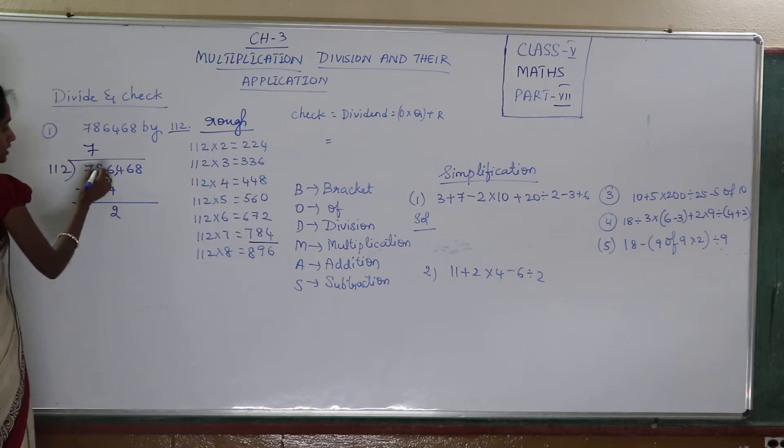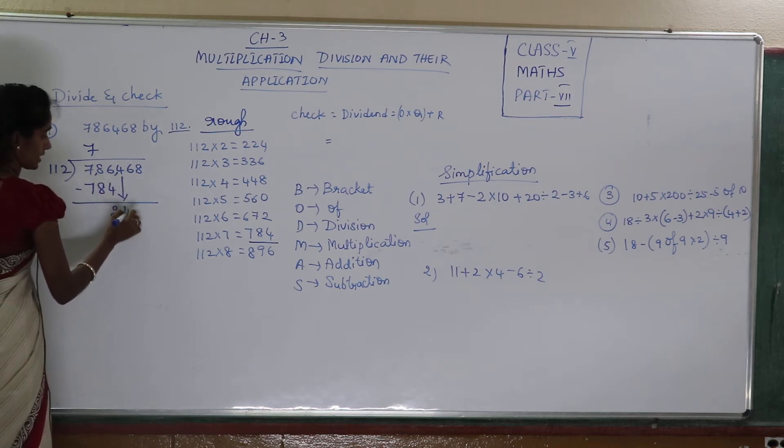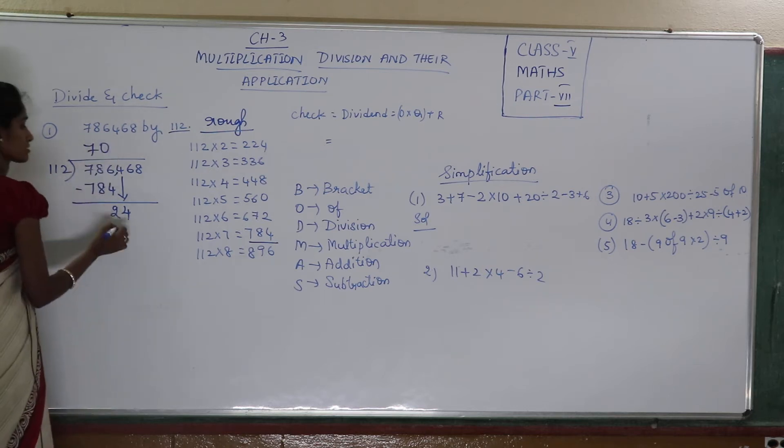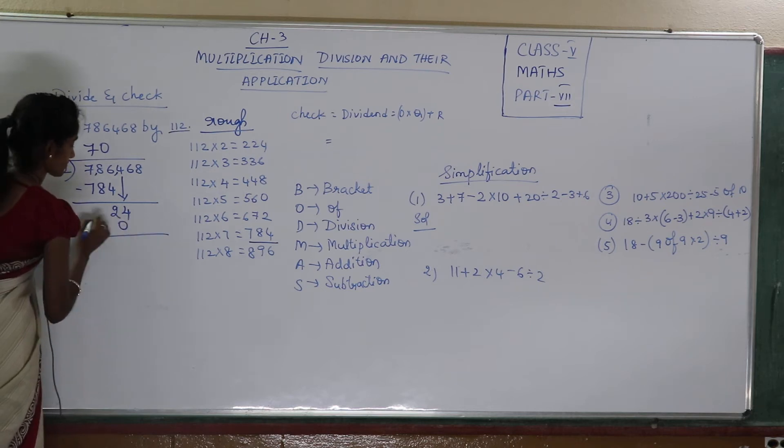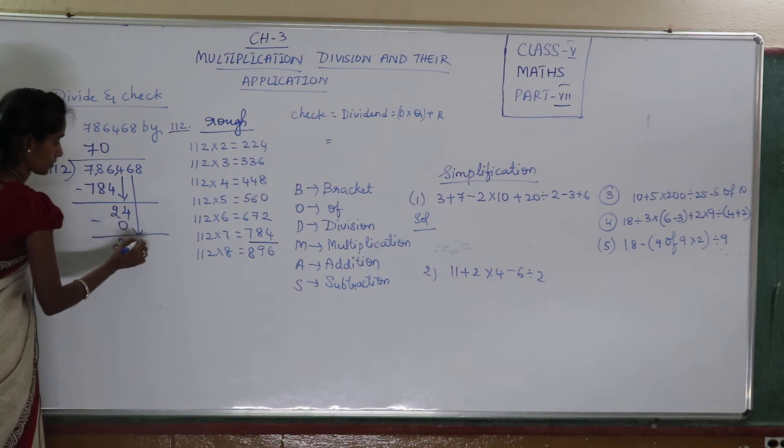Now 6 minus 4, 2. 8 minus 8, 0. 7 minus 7, 0. Now I will take this number 4 down. Now this 24 is less than my 112, right children? So what I do is 7 zeros, 1, 0, then 24. Now take this number down.